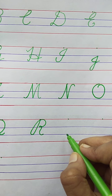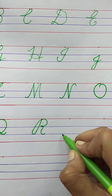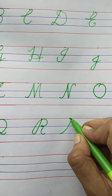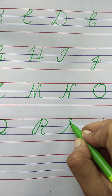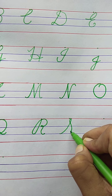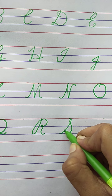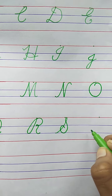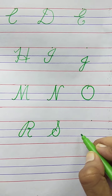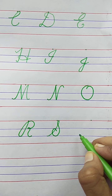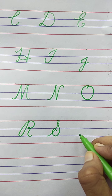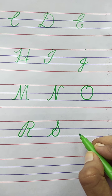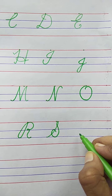Now, the next letter. S. Slanting line, loop, semi-circle, and curve. S for Sailor. The spelling of Sailor is S-A-I-L-O-R. Sailor.